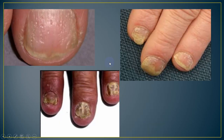Nail involvement such as nail pitting or onycholysis is commonly observed with distal interphalangeal joint involvement. Nail pitting shows small pits over the nail. Onycholysis refers to complete destruction and separation of the nail plate from the finger.